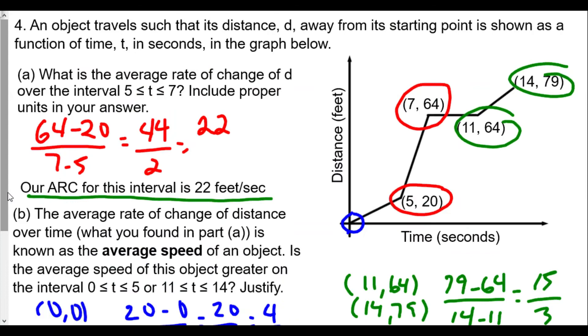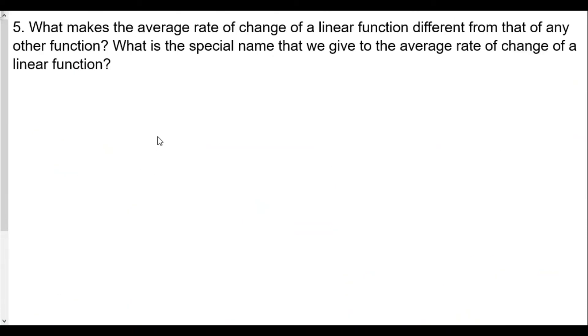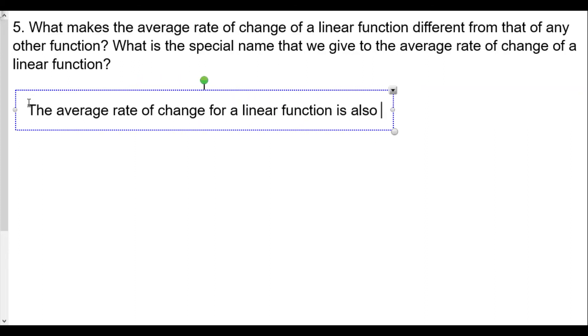Let's go to our last question, question number five. What makes the average rate of change of a linear function different from that of any other function? What is the special name we give to the average rate of change of a linear function? In the case of linear functions, it's tied together in what we named the average rate of change. The average rate of change for a linear function is also known as the slope of the line.